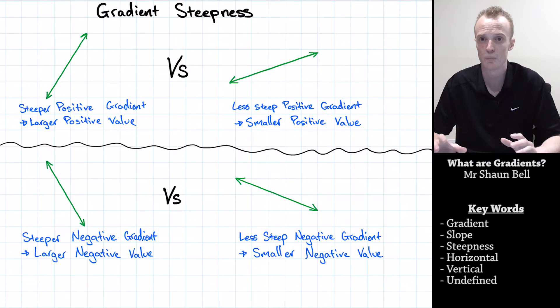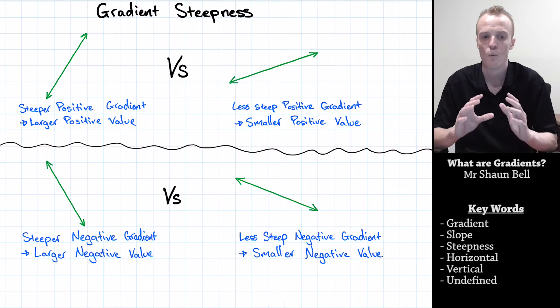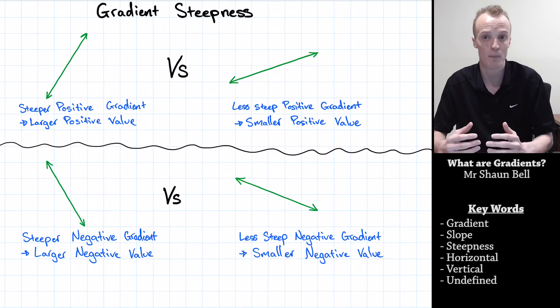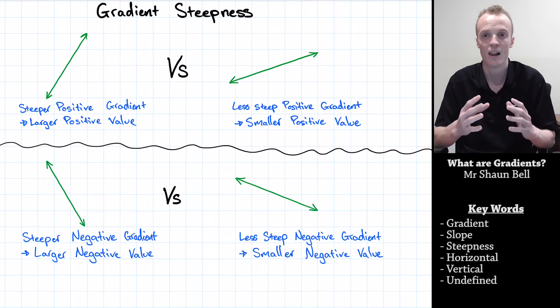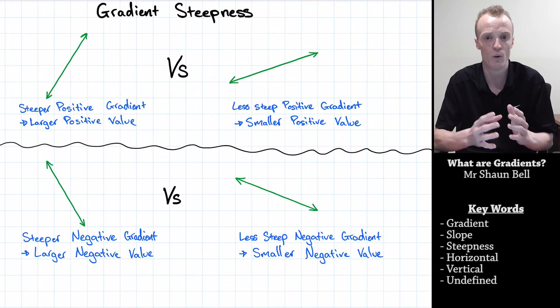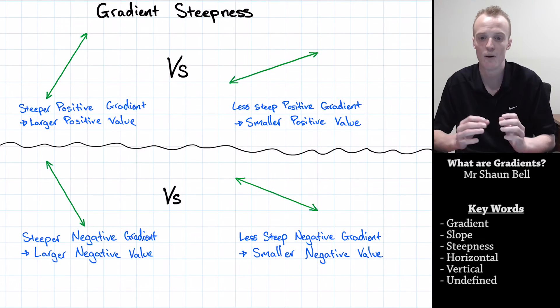You might be thinking at this point, how do we tell what those gradients are? But that is for a future video. For now, let's quickly recap positive and negative gradients. When a gradient is steeper, we give it a larger positive or negative value. However, when a gradient is less steep, we give it a smaller positive or negative value.